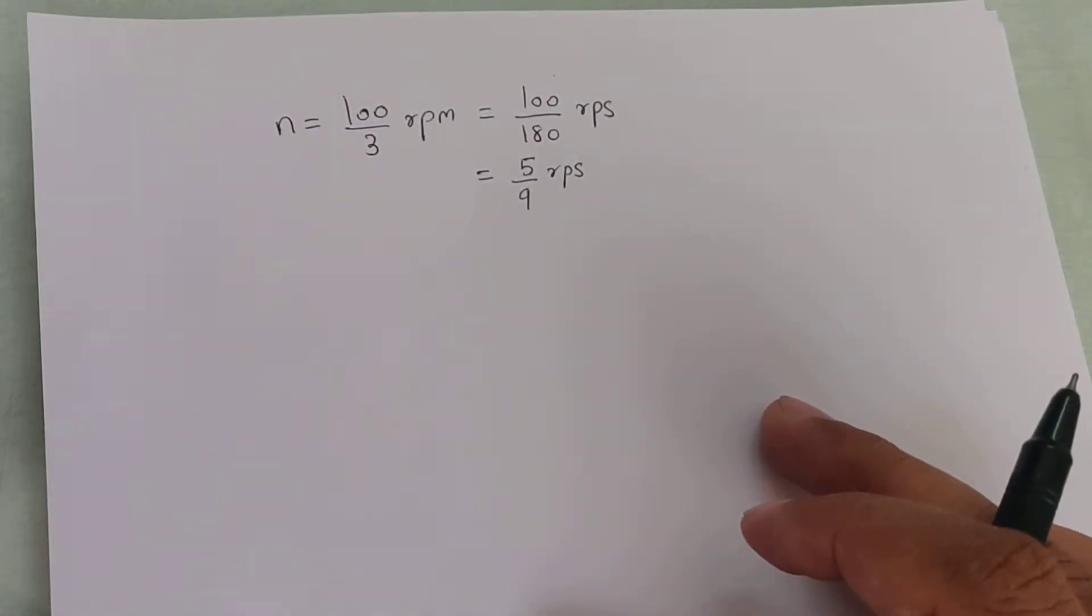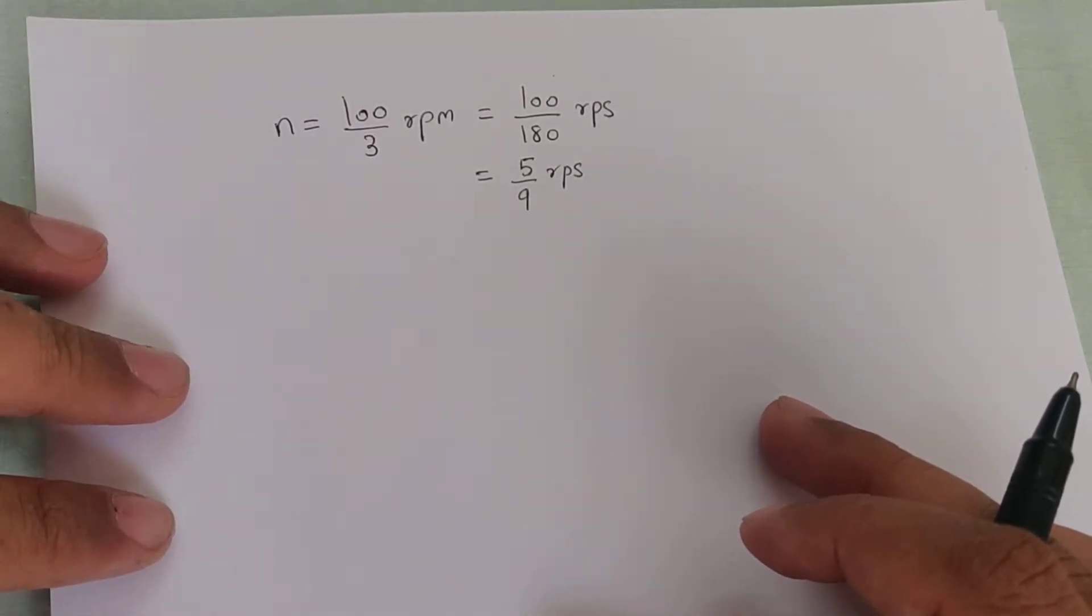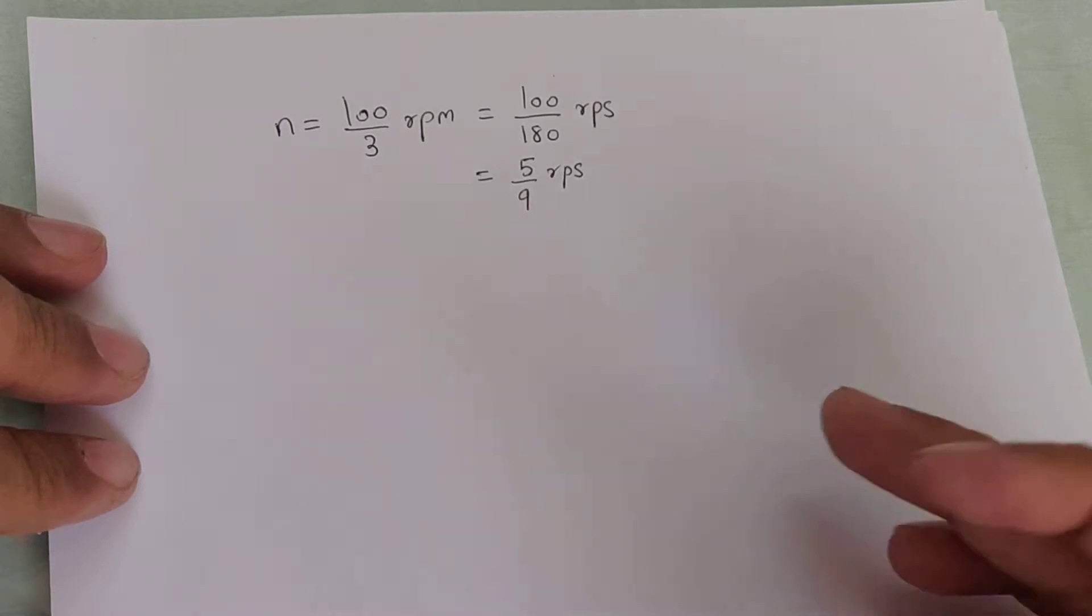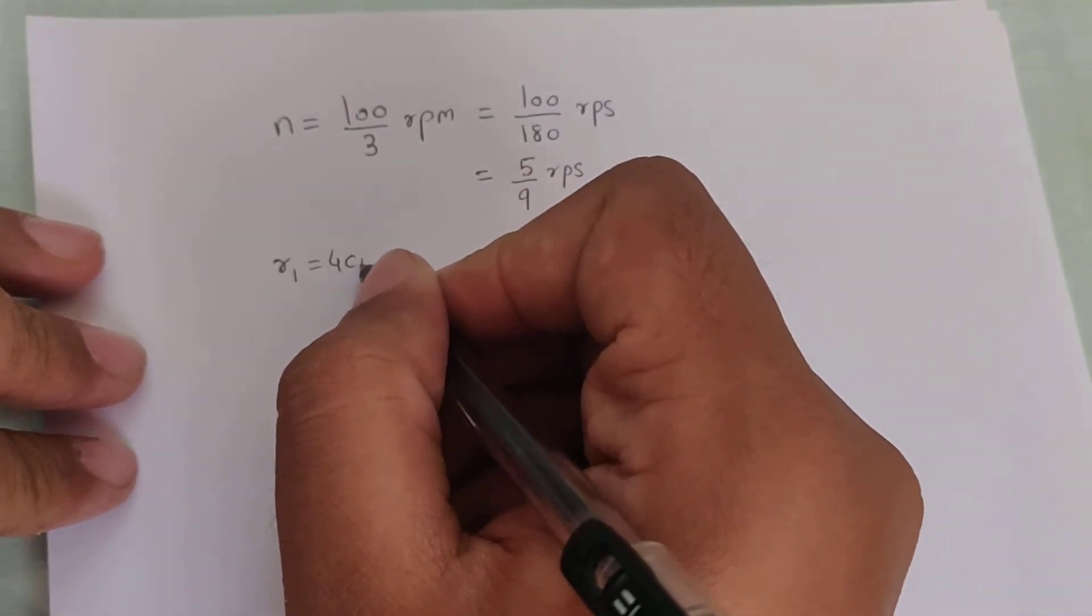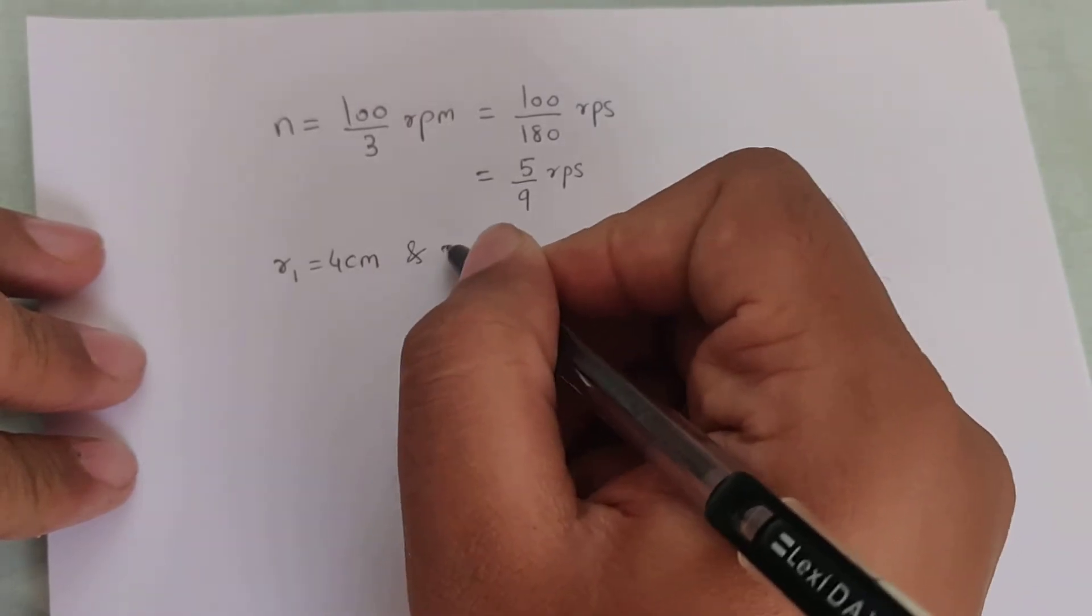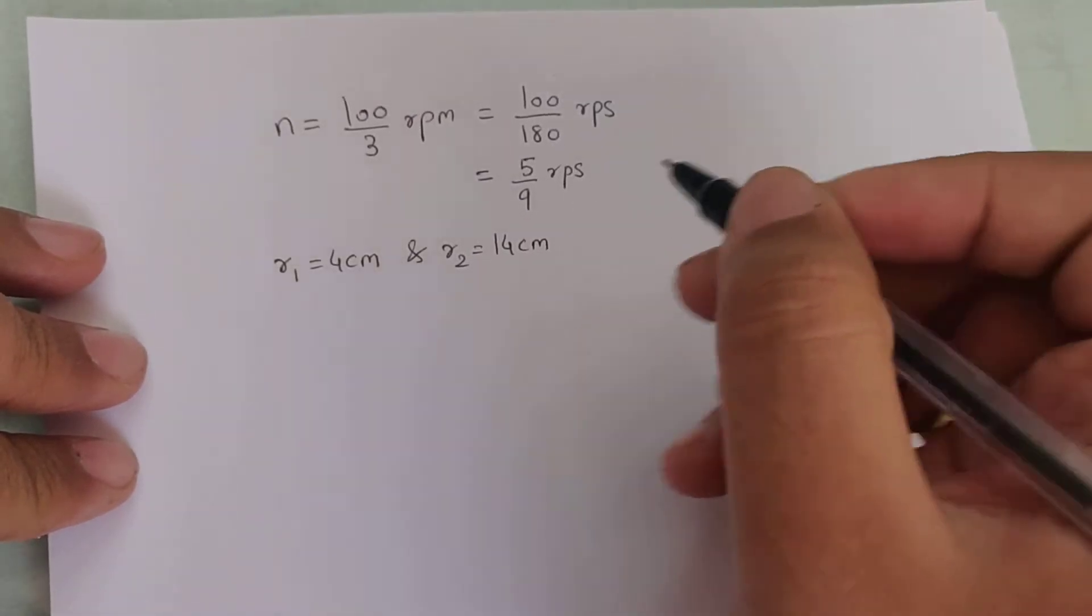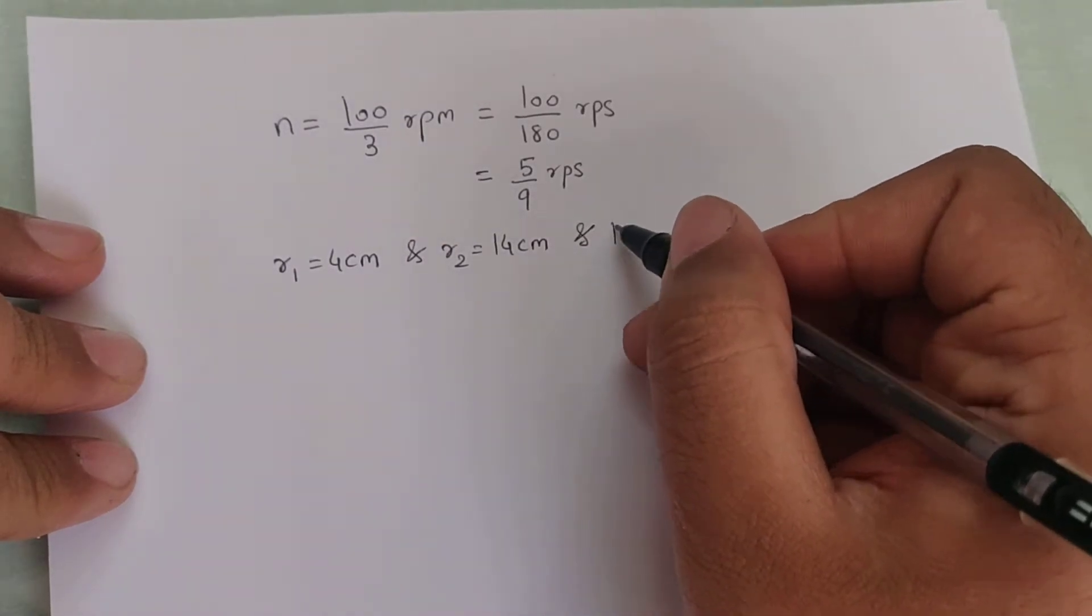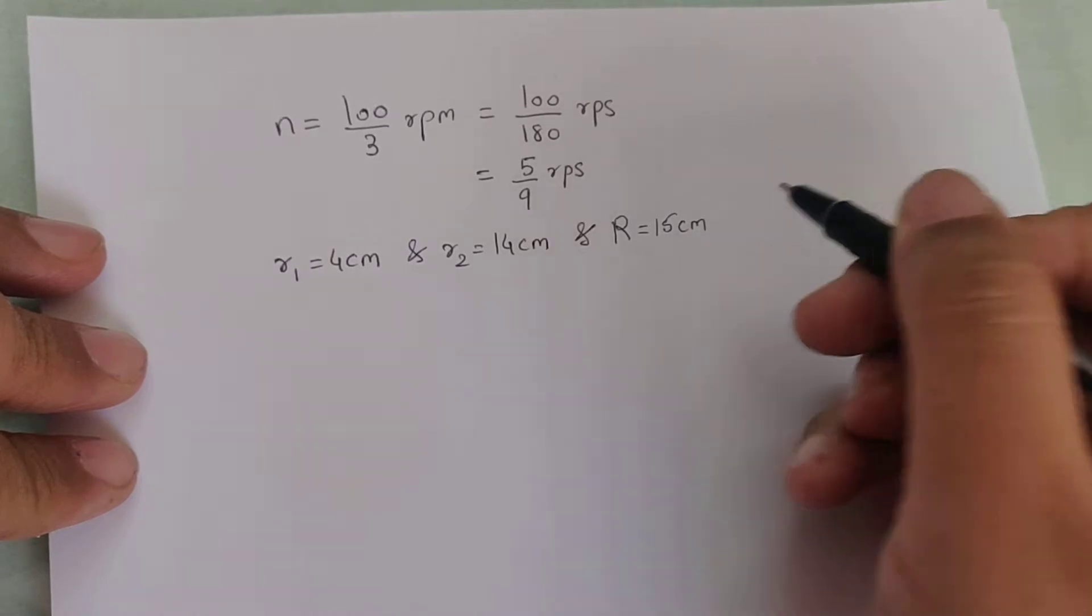It has a radius of 15 centimeter. Two coins are placed at 4 centimeter and 14 centimeter respectively from the center of the record. So I can assume r1 is 4 centimeter for coin number 1 and r2 is 14 centimeter for coin number 2, and the radius of the disc or the record is 15 centimeter in case if we need to use it.